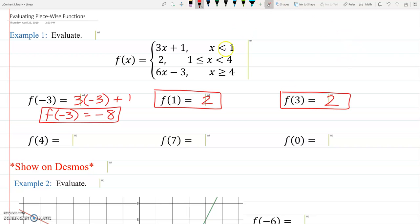F of 4. We kind of talked about this before. If I look at this middle piece, 4 is not less than 4. That's not true, so I'm not using the middle one. 4 is greater than or equal to 4, so that's where I'm using it. So I'm doing 6 times 4 minus 3. So F of 4 equals 24 minus 3, which is probably 21.